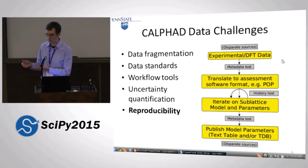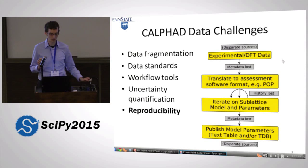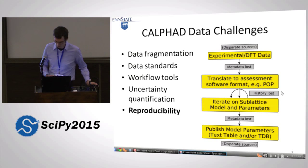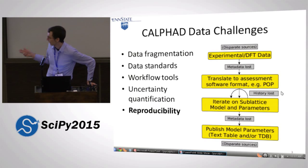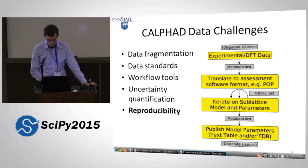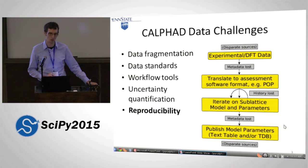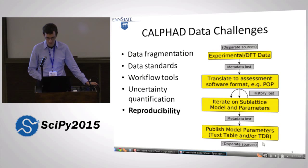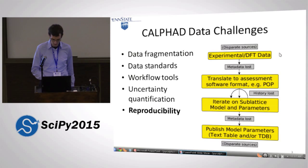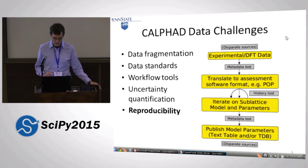Once you've gathered the data, you have to go through a process to get it into a format you can use to fit your models. Then you iteratively try to figure out the best parameters — it's not all automated. There's subject matter expertise that has to go into what reasonable parameters are. And as depicted by those gray boxes, you lose history and metadata all through this entire process. Finally, you publish these parameters, often as a text table, sometimes in a digital format called TDB. But it's fragmented because it goes into disparate sources.